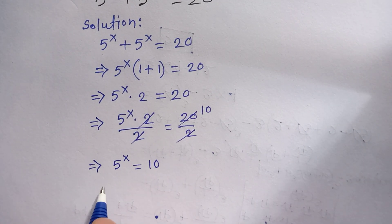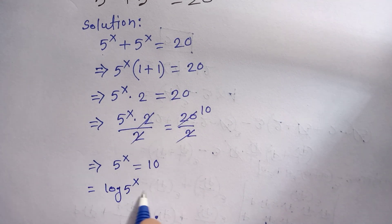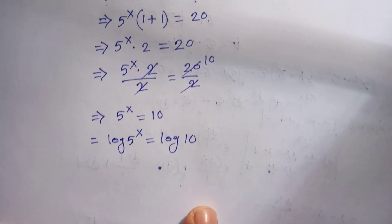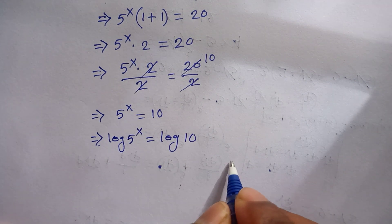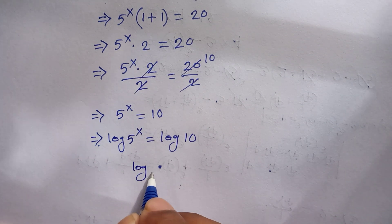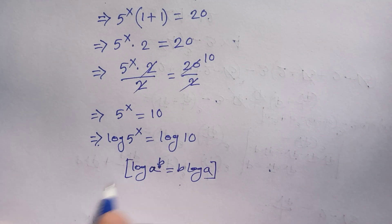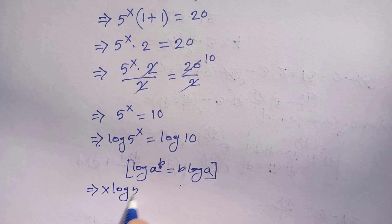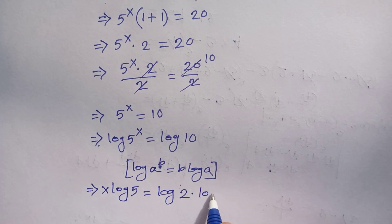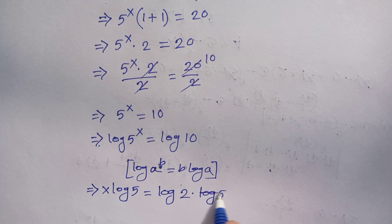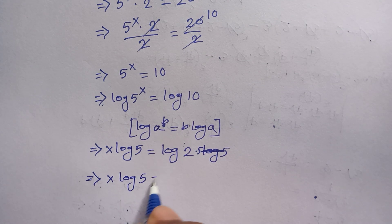Now we multiply both sides by log, so log of 5 to the 4X is equal to log of 10. We can bring the exponent 4X to the front according to the formula: log of a to the B equals B times log of a. So we get 4X times log of 5 is equal to log of 10, which can be written as log of 2 times 5.